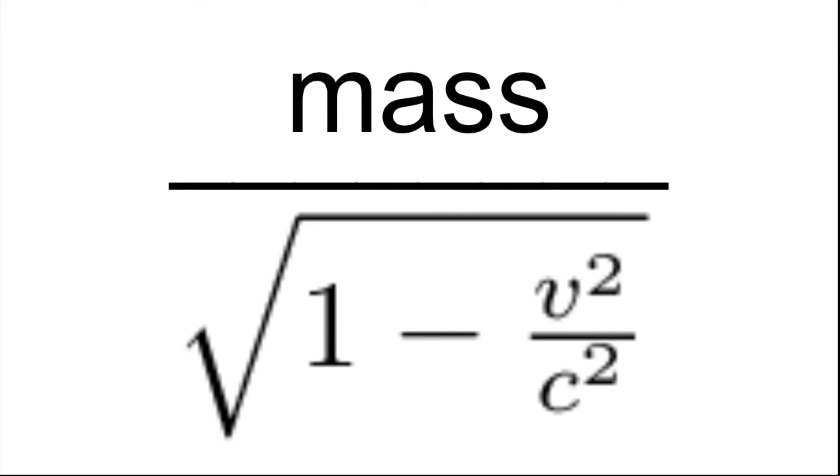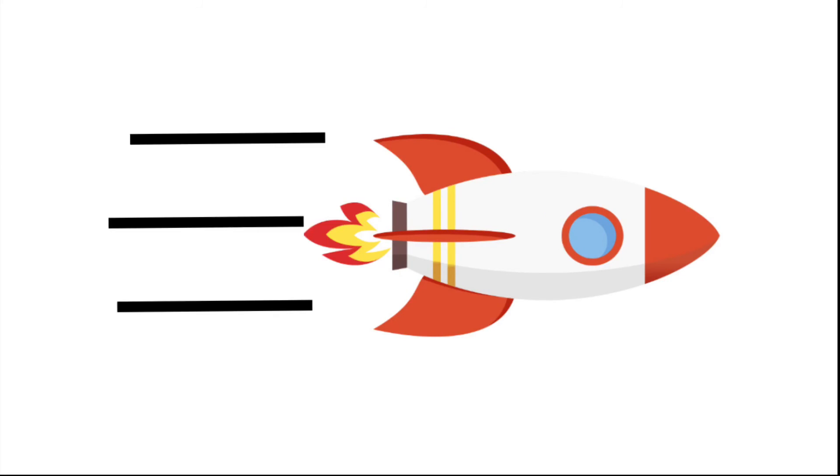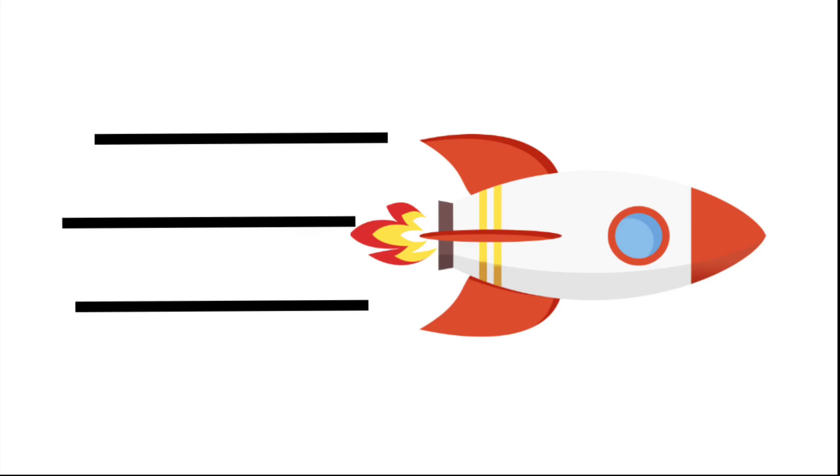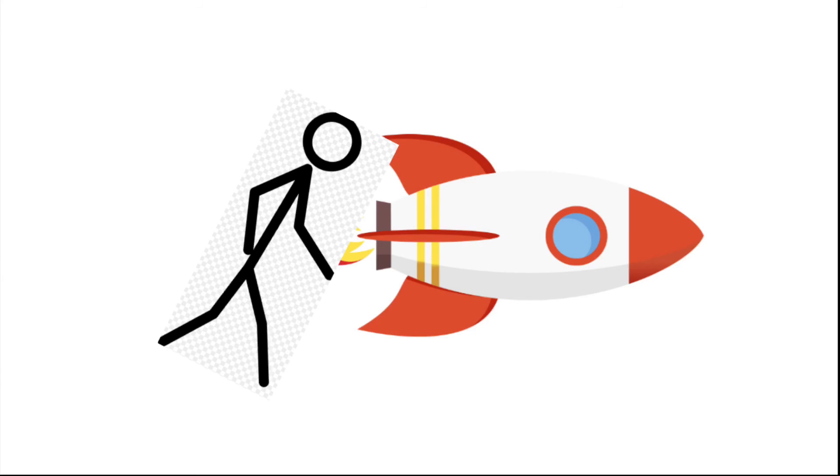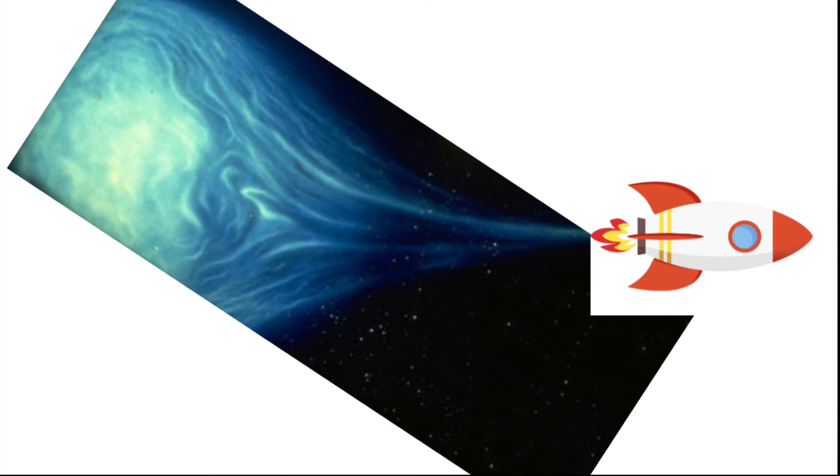This means that as you speed up, you get heavier and heavier. This is one of the reasons why it is impossible to get to the speed of light. Each time you add the same amount of force to speed up the object, the object speeds up by less and less. By the time it is at near light speeds, it would take all the energy that the Sun ever makes just to speed it up by one mile per hour. Mass dilation doesn't really cause any paradoxes. It just enforces the cosmic speed limit.